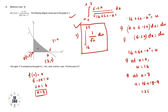An important point to remember: when changing the integration variable, you must change the limits carefully. Using the limits 0 to 3 with variable u would make the entire calculation wrong — those limits belong to x. Since we changed the variable from x to u, we must change the limits accordingly.